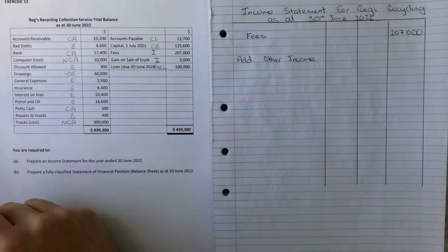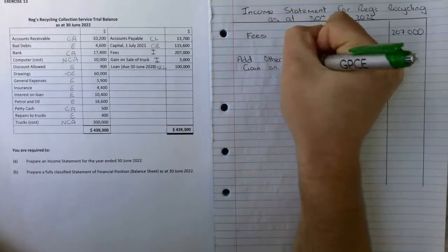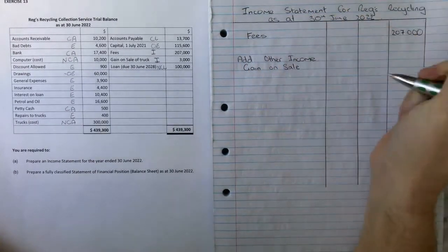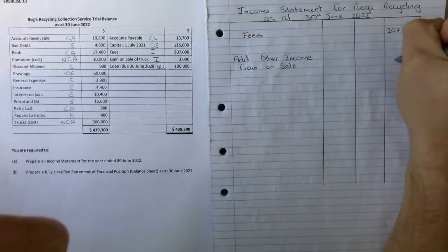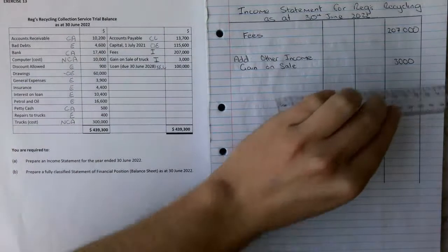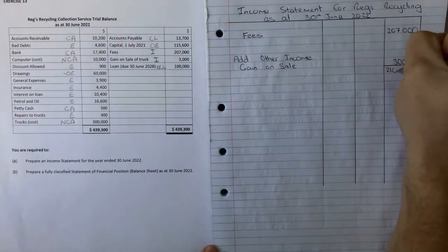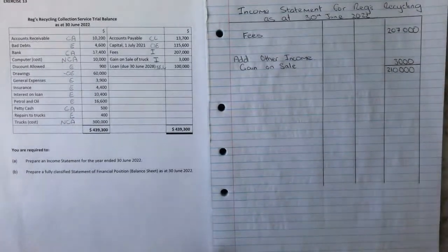Our other income is our gain on the sale of trucks, so gain on sale which is going to come for $3,000. So our total income for this one is $210,000.